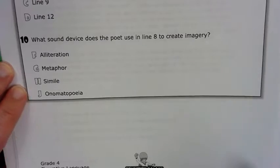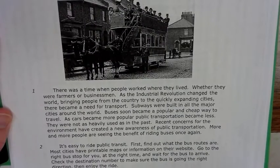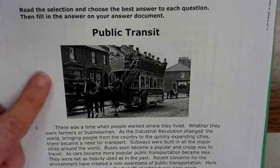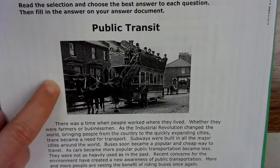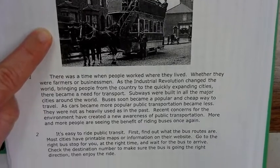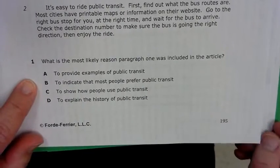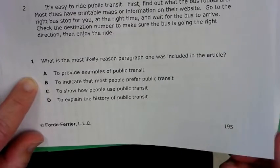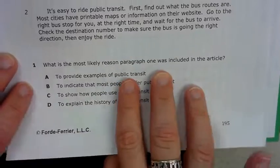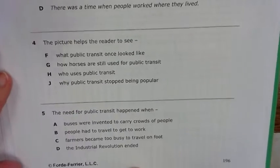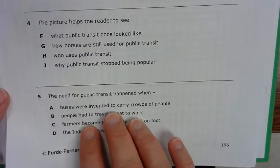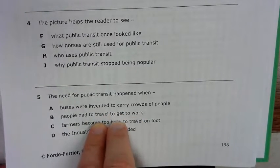The next essential standard looks at details and determining key ideas. This passage is about public transit — you can see this is from a long time ago. You'll be finding key details and determining the main idea. One question asks why paragraph one was most likely included in the article. There are additional questions two through five on the back, and you'll definitely need to go back into the passage to find the answers.